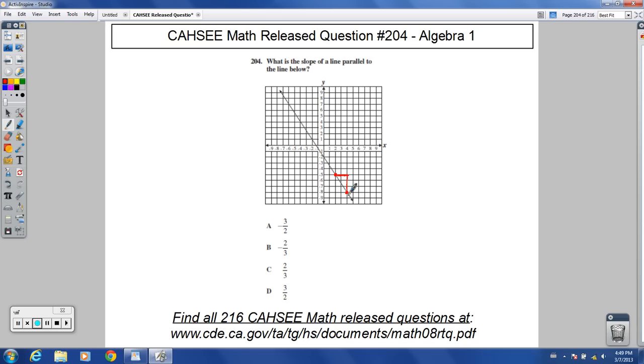Do your rise over run idea. You're running back and forth, and you're rising, you're going up and down like the sun rises, the sun sets. So slope is rise over run. And I always go from left to right, just makes things easier.